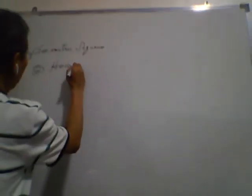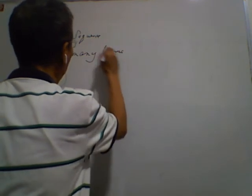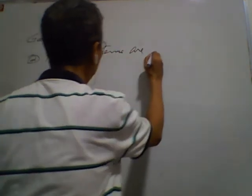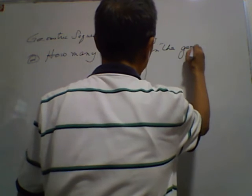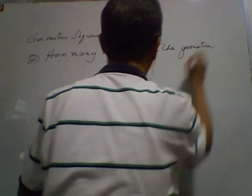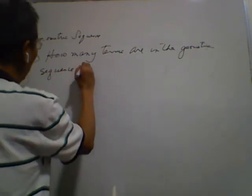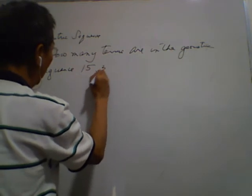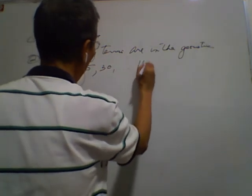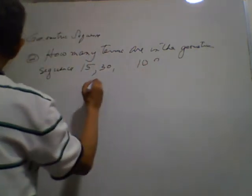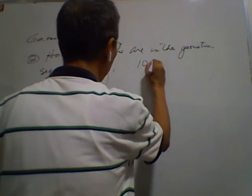How many terms are in this geometric sequence? 15, 30, and the last term is 10,935.